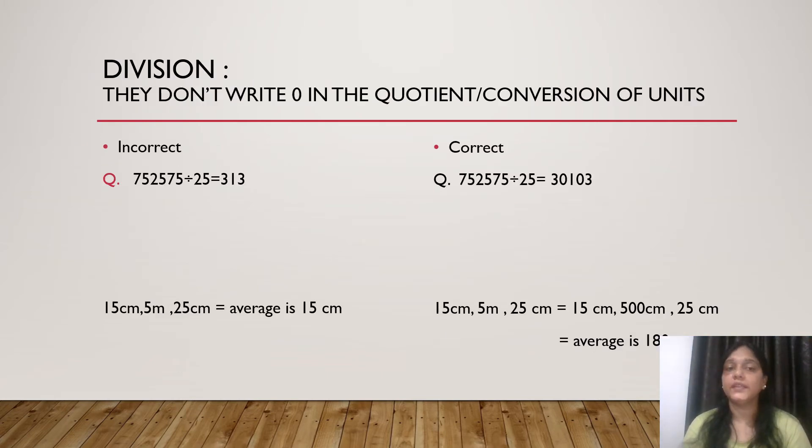While dividing the numbers, students get confused because they do not write zero in the quotient. Let us take one example. 752575 will be divided by 25. They simply write 313 which is wrong. The correct answer will be 30103.